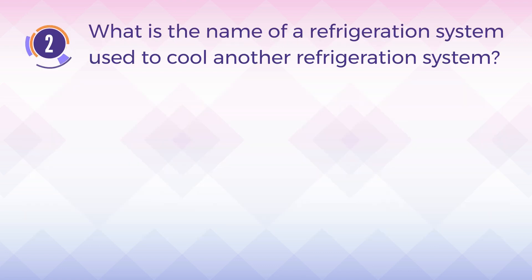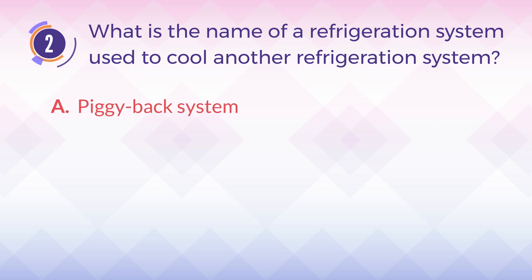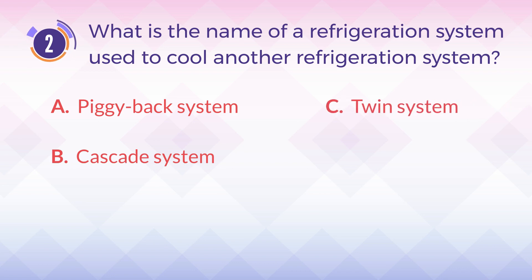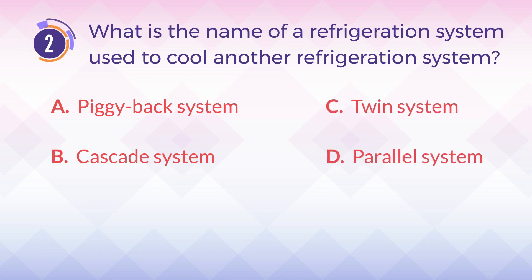Number two: what is the name of a refrigeration system used to cool another refrigeration system? A) piggyback system, B) cascade system, C) twin system, D) parallel system.